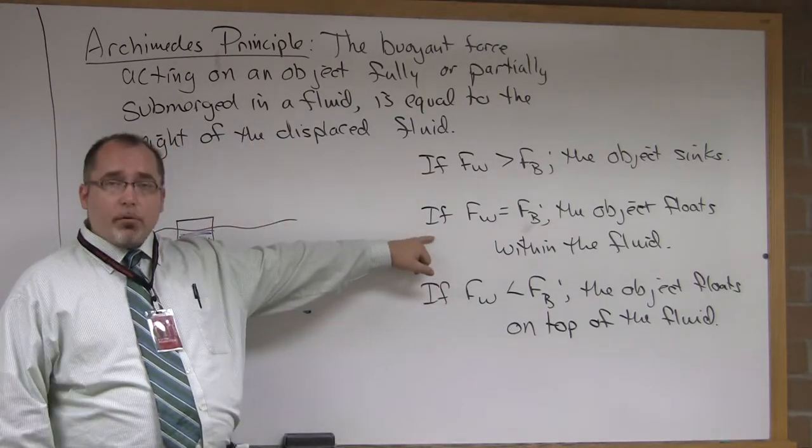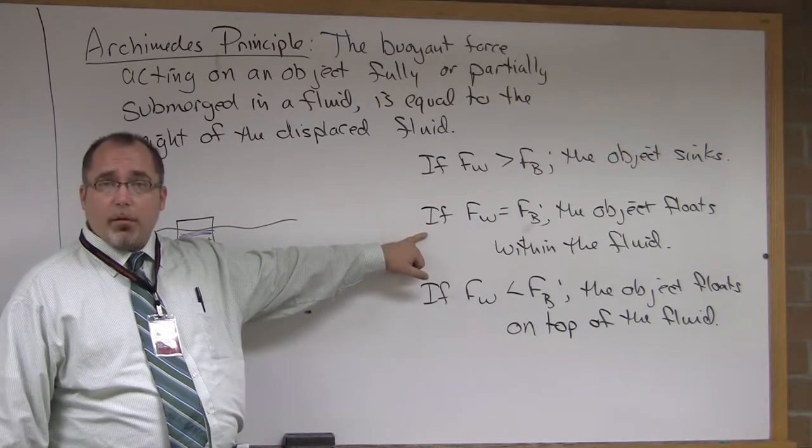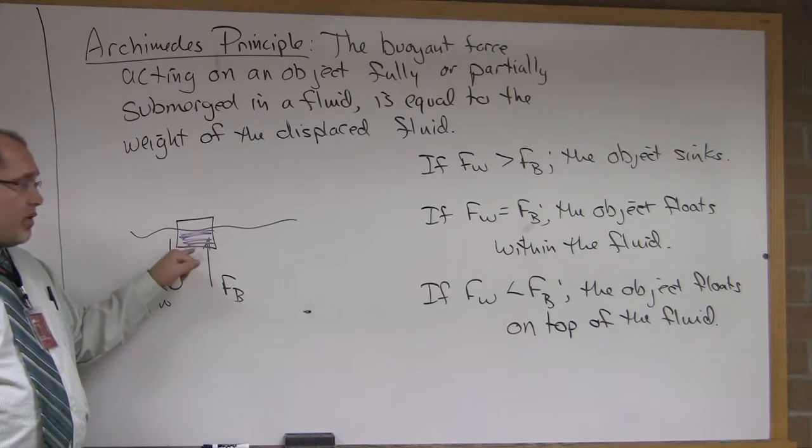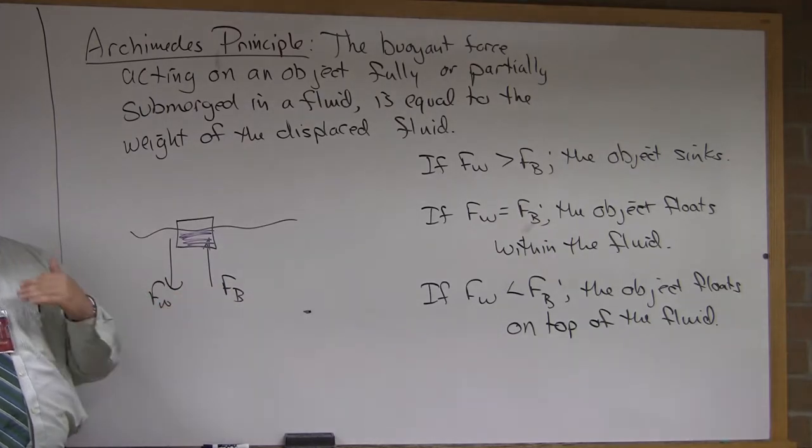Now if the weight is equal to the buoyant force, the object, in this case a ship, will float within the fluid. In other words, the ship is usually partially submerged. Part of it is underwater, part of it is above water. That's a perfect example of where the weight of the object is equal to the buoyant force.